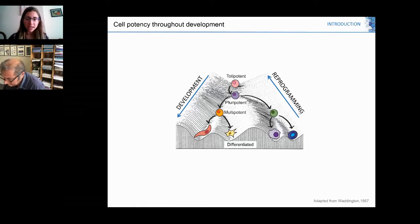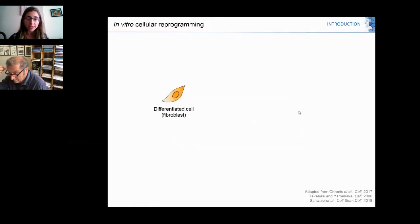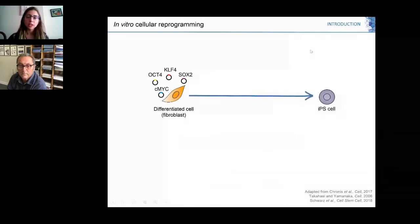The first evidence of cellular reprogramming was shown by Yamanaka. He used differentiated cells, in this case fibroblasts, and expressed exogenously four transcription factors. From those cells he obtained induced pluripotent stem cells.